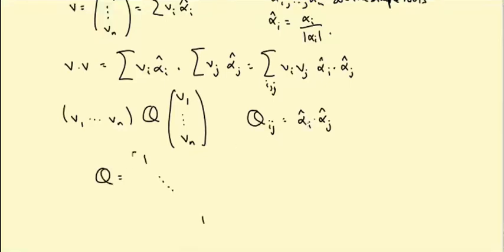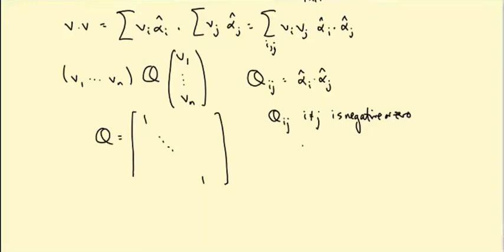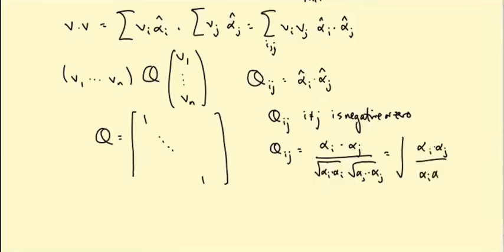Its diagonal entries are just ones, because the alpha hats are unit vectors. The off diagonal entries are negative or negative or zero. That's because simple roots have non-positive dot products with one another, and that doesn't change if you rescale them. So let's see if we can understand what the IJth entry of Q is. It's alpha I dot alpha J. But then we have to rescale to make it a unit vector. So that's divided by square root alpha I dot alpha I times square root of alpha J dot alpha J. In other words, that's the square root of alpha I dot alpha J over alpha I dot alpha I times alpha I dot alpha J over alpha J dot alpha J.